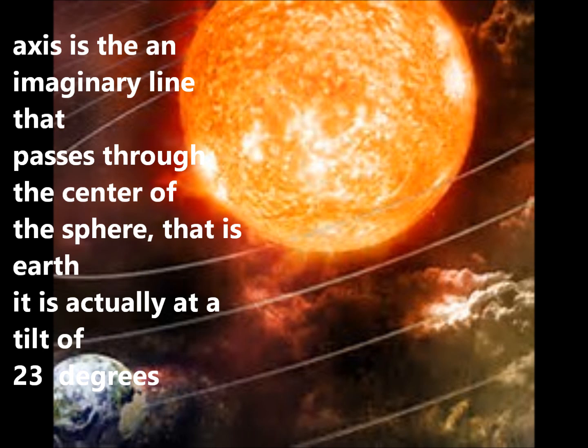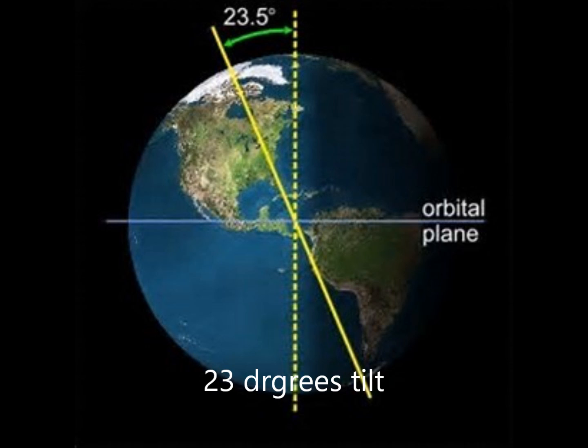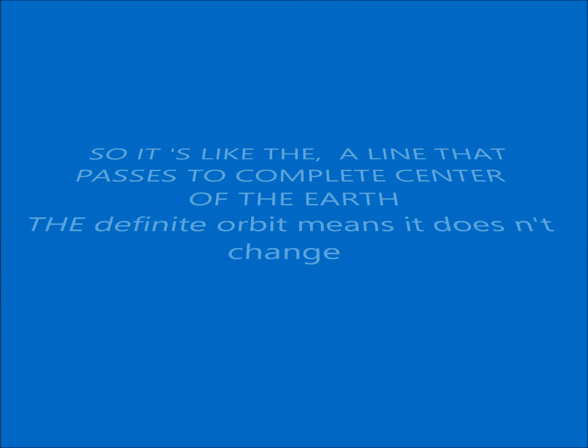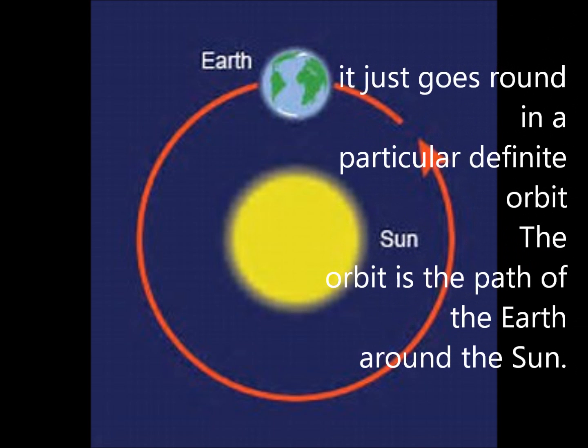The axis is actually at a tilt of 23 degrees. It's like a line which passes through the complete center of the earth. 'Definite orbit' means it doesn't change — the earth just goes around in a particular, definite orbit. The orbit is the path of the earth around the sun.